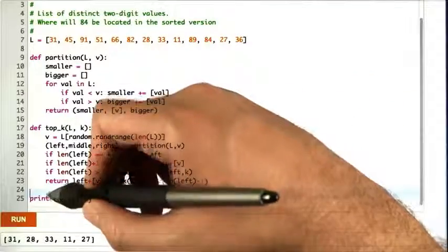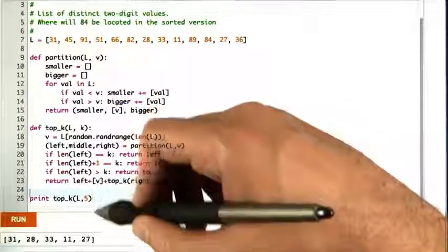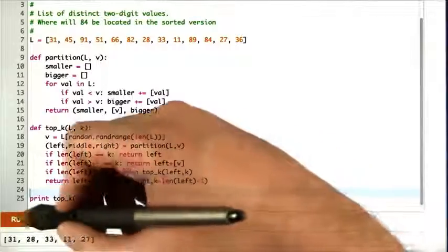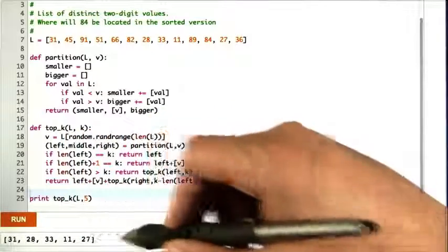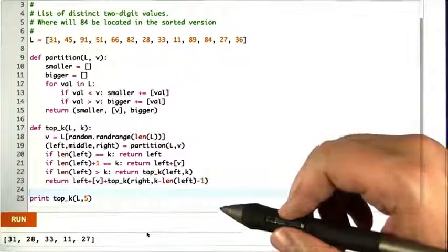So we call print top k of L, 5, and we get back 5 elements. Not sorted, but these are exactly the 5 smallest elements of L. So it did the work.